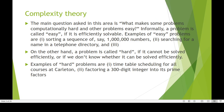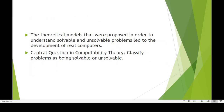In complexity theory, the main question asked is: what makes some problems computationally hard and others easy? Informally, a problem is called easy if it is efficiently solvable. Examples of easy problems are sorting a sequence of numbers or searching for a name in a telephone directory. A problem is called hard if it cannot be solved efficiently, or if we don't know whether it can be solved efficiently. Examples of hard problems are timetable scheduling and the factoring of a 300-digit integer into prime factors.